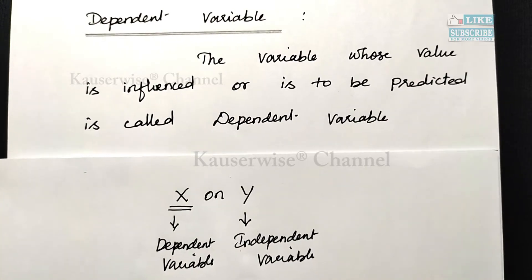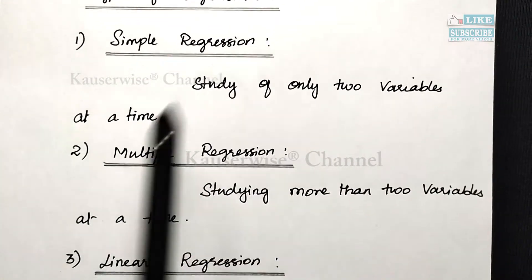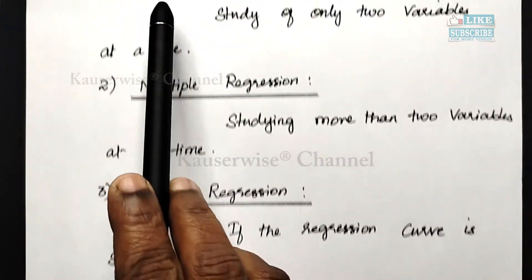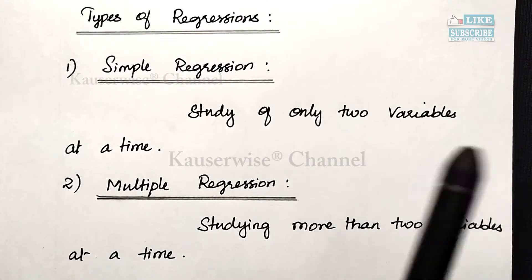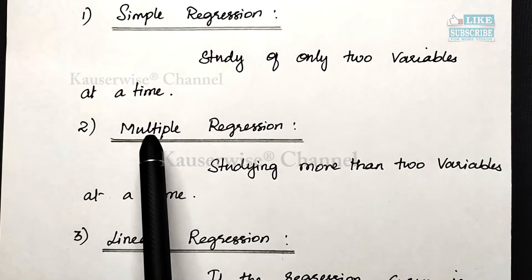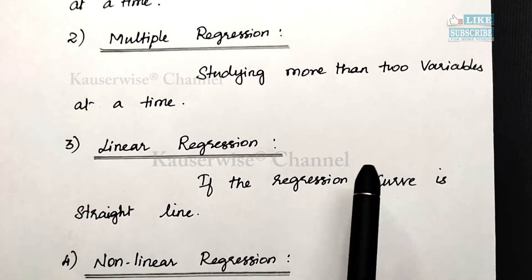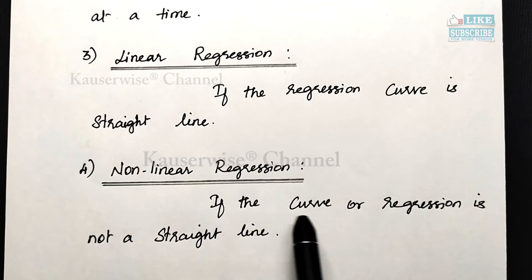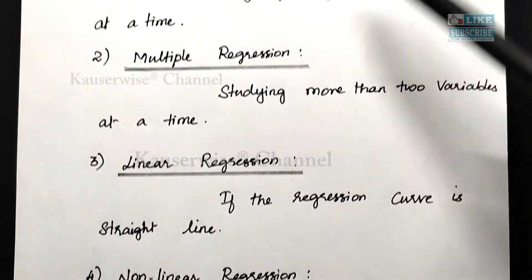Now let us see the different types of regression. Regressions are classified into four types. The first is simple regression, which is the study of only two variables at a time — finding the relationship between two variables. The second is multiple regression, which means studying more than two variables at a time. Third is linear regression — if the regression curve is a straight line, it is called linear regression. Fourth is non-linear regression — if the regression curve is not a straight line, it is called non-linear regression.